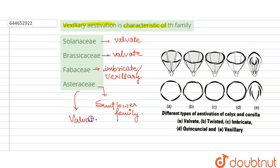So other three are the examples of valvate aestivation and this is the example of imbricate or the vexillary kind of aestivation. So here the correct answer is Fabaceae, others are wrong. Thank you.